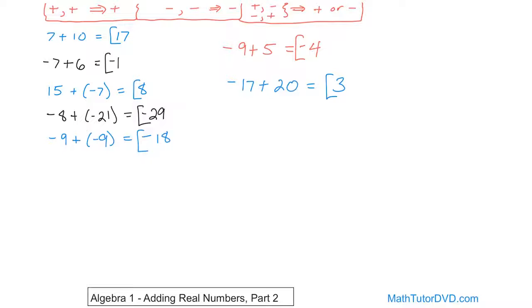And then we have 15 plus 15 — just a regular addition problem. Adding two positive numbers, so the answer will be positive. 15 plus 15 gives us positive 30, and that's the final answer.